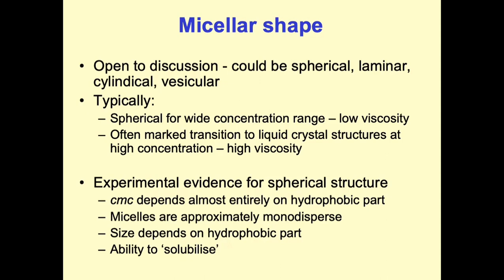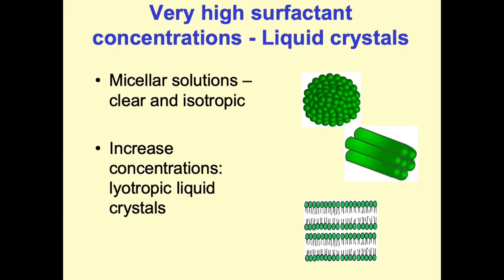Their ability to solubilise poorly water-soluble drugs is also due to their spherical structure. The micelles we are concerned with in pharmaceutical formulations are spherical — like the top green image here — with the hydrophilic head group facing outwards toward the aqueous environment and the hydrophobic tails all pointing inwards, giving a central oily core. These systems are clear and isotropic, meaning the structure looks the same from any angle, because it's spherical.